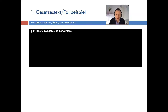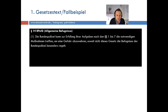Fangen wir an mit Paragraf 14 Absatz 1 Bundespolizeigesetz. Zum Gesetzestext: Absatz 1 – die Bundespolizei kann zur Erfüllung ihrer Aufgaben nach den Paragrafen 1 bis 7 die notwendigen Maßnahmen treffen, um eine Gefahr abzuwehren, soweit nicht dieses Gesetz die Befugnisse der Bundespolizei besonders regelt.